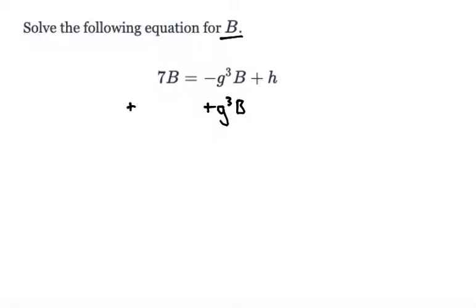What I do to one side of the equation, I need to do to the other side, plus g cubed b. So since we have a negative g cubed b and then a plus g cubed b, these two terms go to zero on the right hand side.